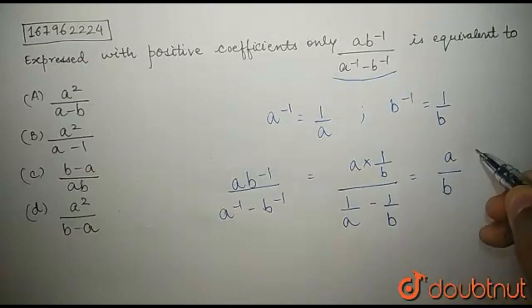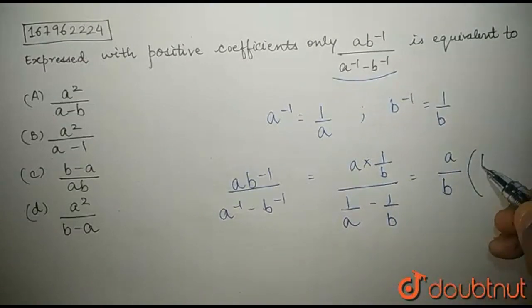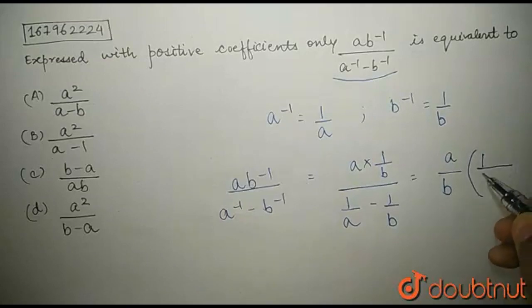we get A upon B, 1 upon B minus A upon AB.